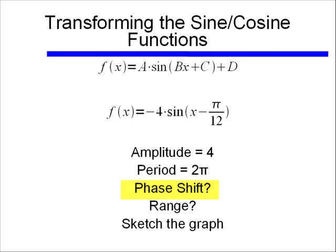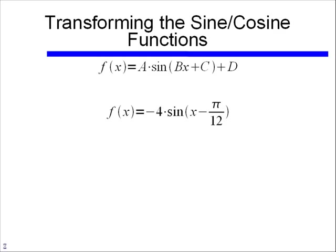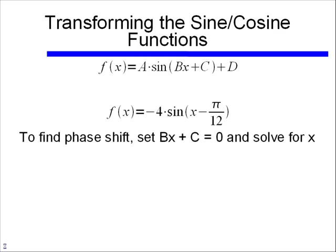The phase shift however looks like it will be non-zero, because I have a value for c. Again, I'll take my bx plus c, set it equal to 0, since my normal phase shift is 0 for a basic sine wave, and I'll solve for x. So I'll have x minus π over 12 is equal to 0, I'll add π over 12 to both sides, and I'll get the phase shift equaling π divided by 12.